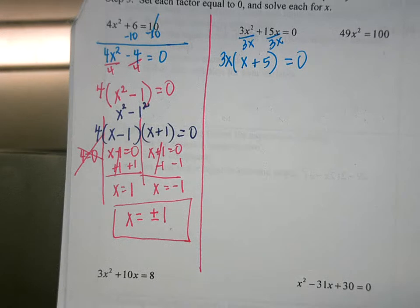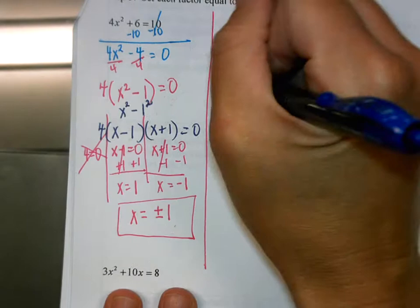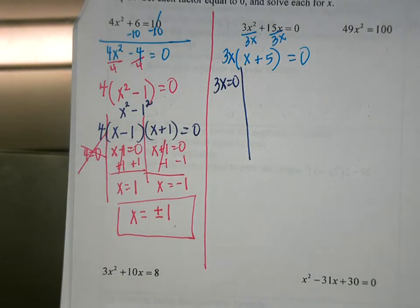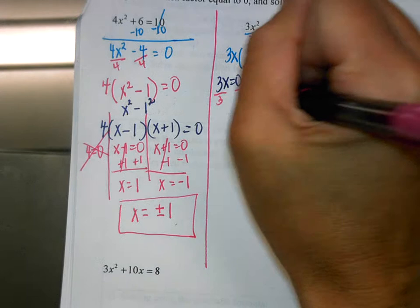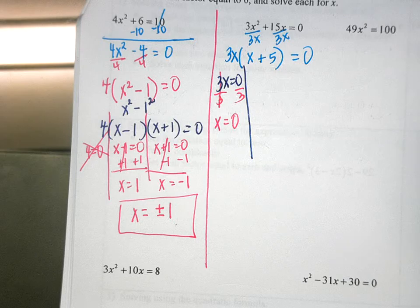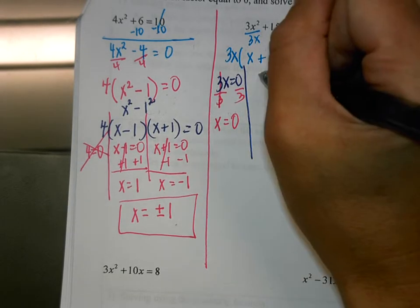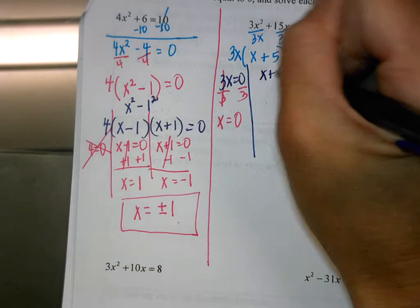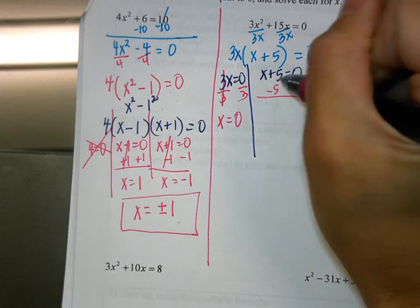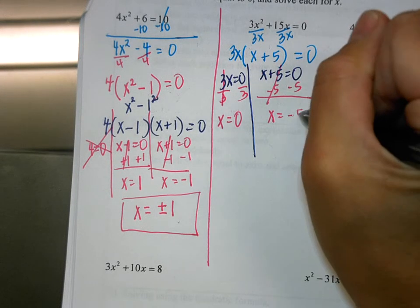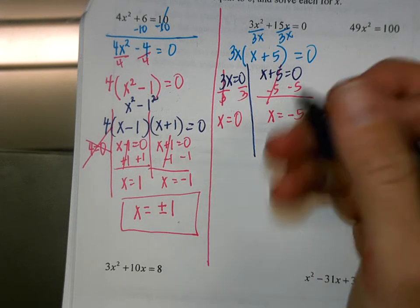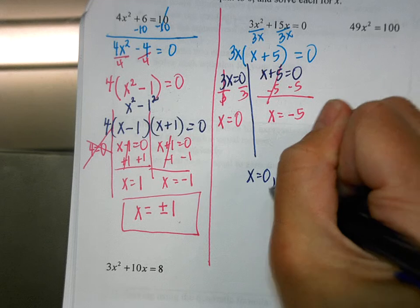So we set our factors equal to 0. 3x equals 0 — what would I do? Divide by 3 to both sides, the 3s cancel out, and 0 divided by 3 is 0. Is it okay to have an answer of 0? Yes. And then x plus 5 equals 0 — subtract 5 from both sides, and x equals negative 5. Can I write plus or minus on this one? No. X just equals 0 and negative 5.